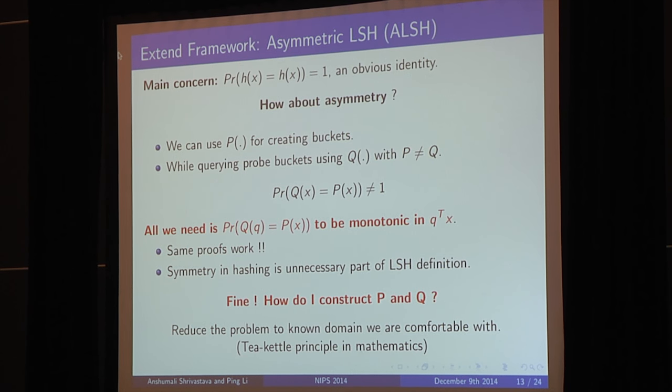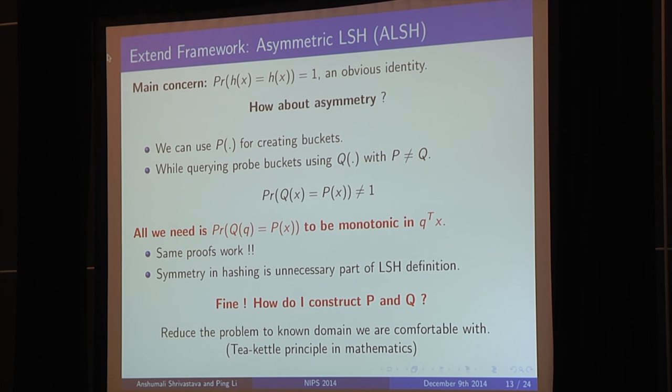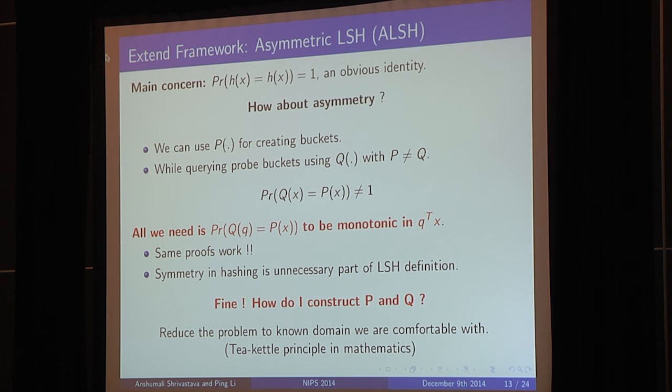Well, the good thing about negative results is that it somehow tells us what not to do. So it seems that the main culprit here is the symmetry. So by symmetry, I mean we are using the same hash function to create buckets and the same hash function to probe buckets. But if you look at the proof of locality-sensitive hashing, there is no such requirement. In fact, if I use a mechanism, say p, for creating buckets, and a different mechanism, say q, for probing buckets, and so long as I guarantee that the bucket I am landing is a good bucket, which means that the probability of q of q is equal to the probability of p of x. If this is monotonic in q transpose x, everything works as it is. Same proof works. So it seems that symmetry was just unnecessary part of the locality-sensitive hashing definitions.